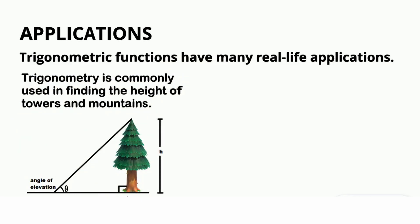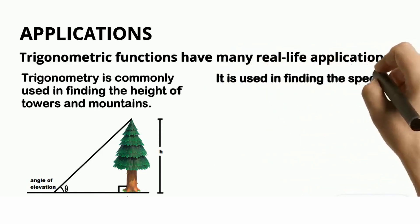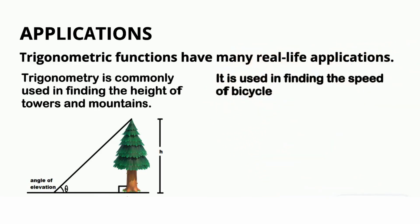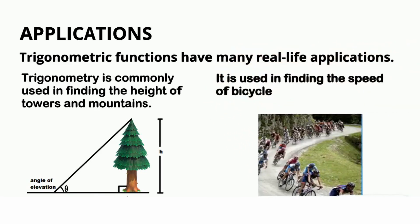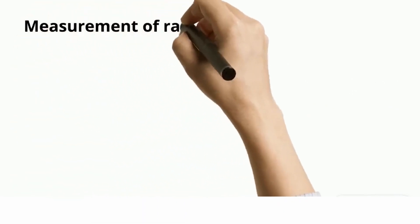We know distance and angle of elevation; from this we can find the height of the tree. One more application is finding the speed of a bicycle. See this picture — using the wheel structure we can find the speed of a bicycle using trigonometry functions. Still many more applications include navigation, astronomy, and surveying.